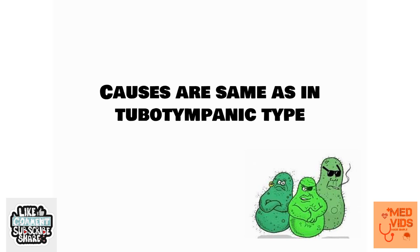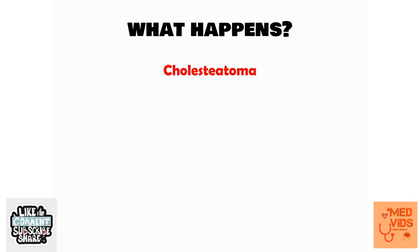The causes and etiology are the same as tubo-tympanic type. Aticoantral disease is often associated with cholesteatoma — keratinizing squamous epithelium in the wrong place, present over the tympanic membrane area in the middle ear cavity. Cholesteatoma has an eroding property and is associated with various complications. Normally, keratinizing squamous epithelium should not be present in the middle ear.